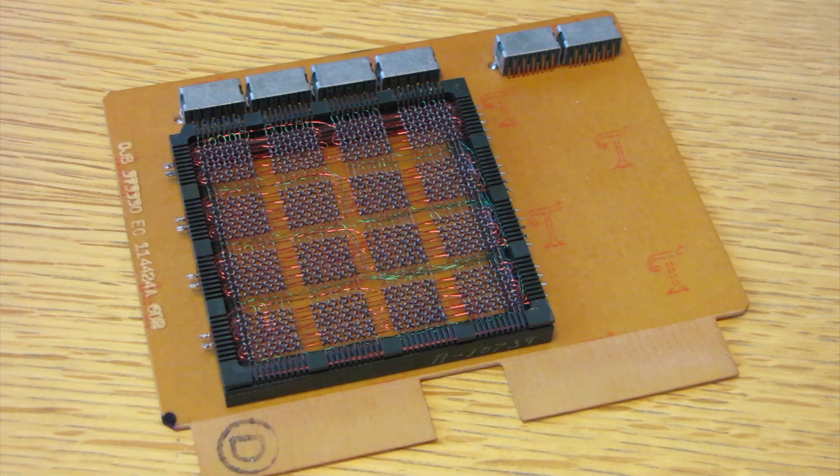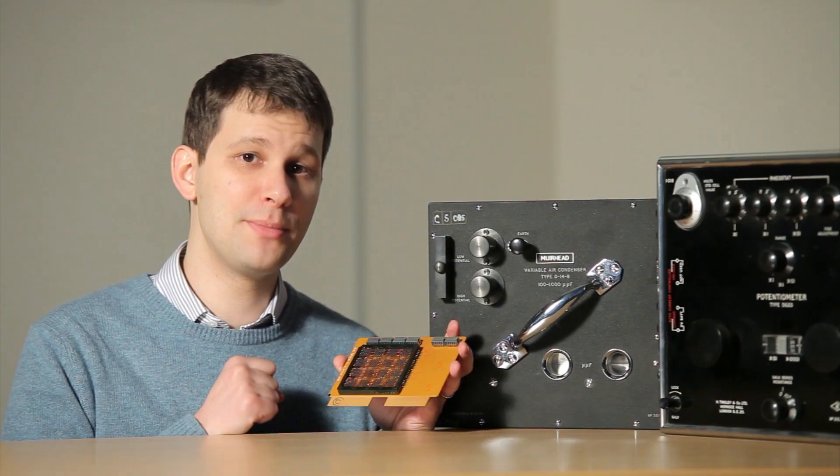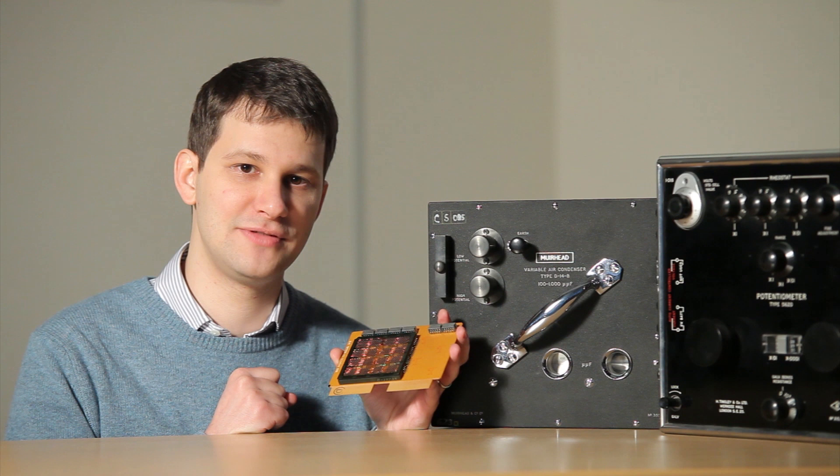Painstakingly woven by laboratory technicians, usually women with a steady hand and endless patience, these devices relied on the interplay between electricity and magnetism to store one bit of data in every magnetic donut known as a core.